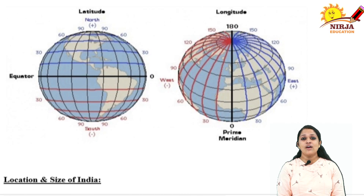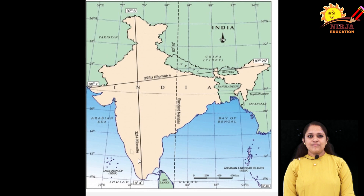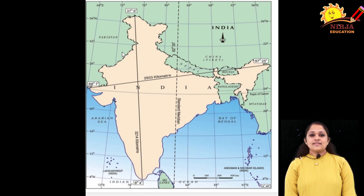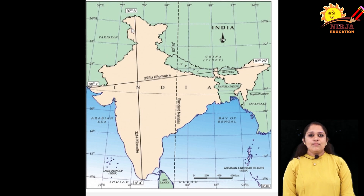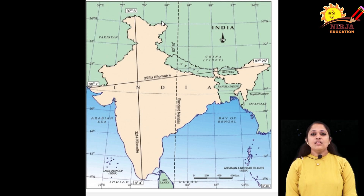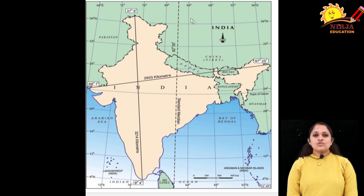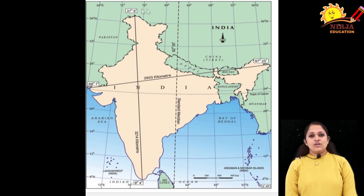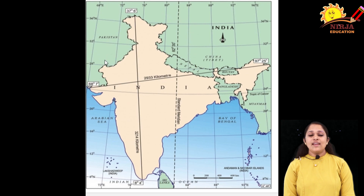Here you can see India's map. India lies in the northern and eastern hemisphere. India is the 7th largest country in the world, covering an area of 3.28 million square kilometers. India covers 2.4 percent of the total geographical area of the world — that means India covers 2.4 percent of the total land area in the world.